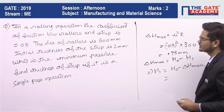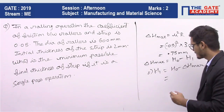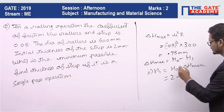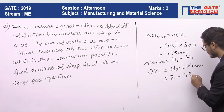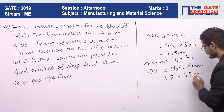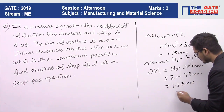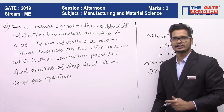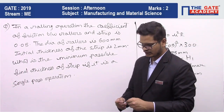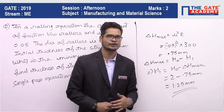So H0 is 2 mm. So it is 2 minus 0.75 mm, which becomes 1.25 mm. So this is the minimum possible final thickness, and the answer is 1.25 mm.